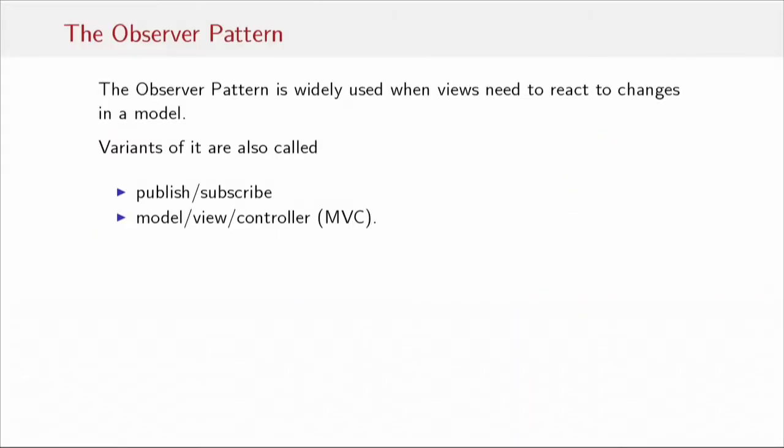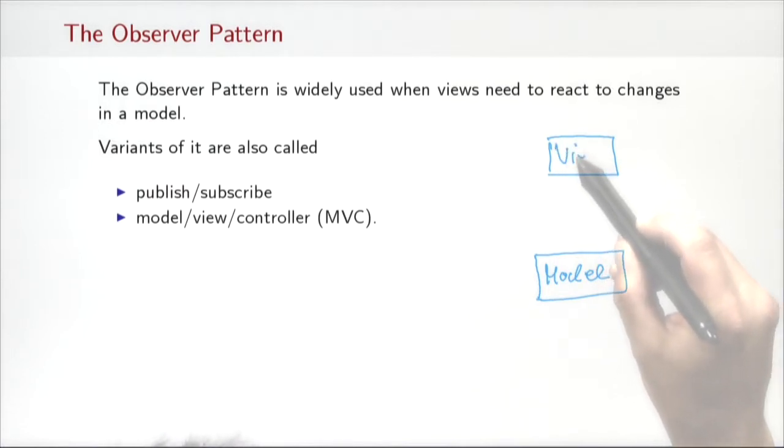The observer pattern is commonly used when we have some sort of model that maintains a state of an application, and we need to have one or more views that essentially present the properties of the model in some way. Variants of the observer pattern are also called publish-subscribe, or model view controller. The idea is always that we have some sort of model which captures the state of the application, and we might have one or more views that present that state, and there would actually be a varying number of views.